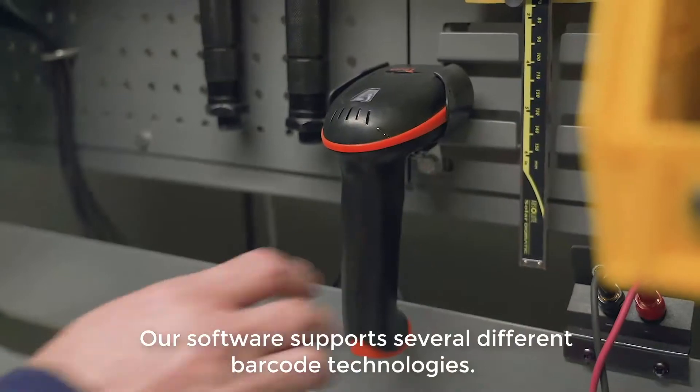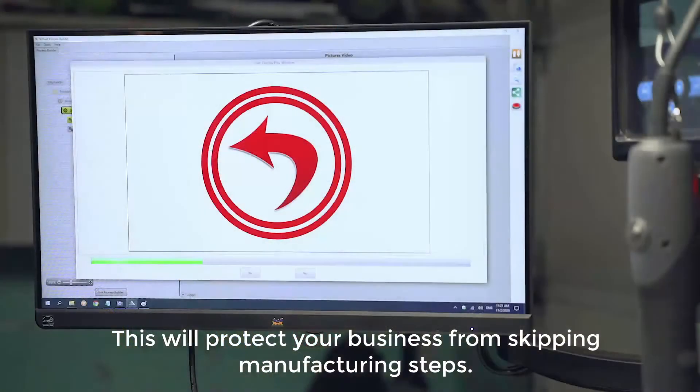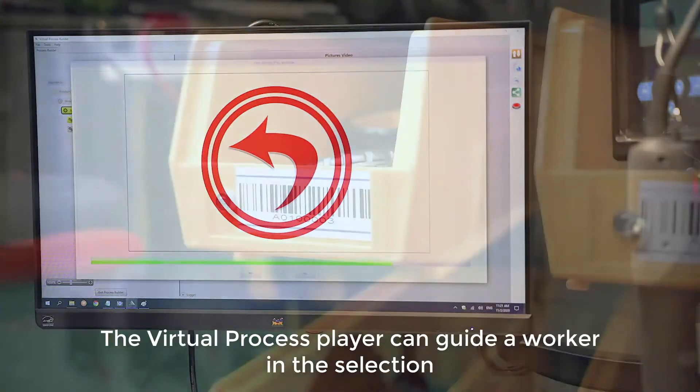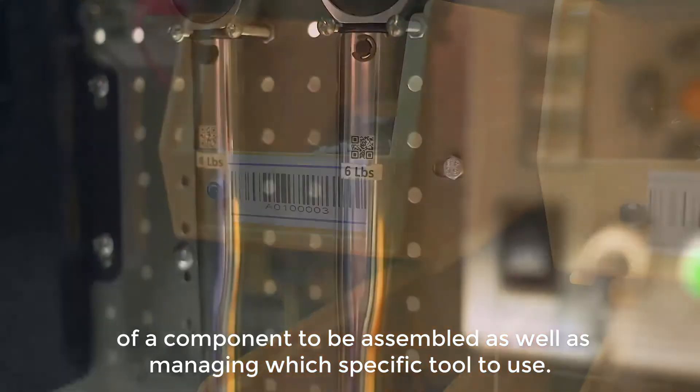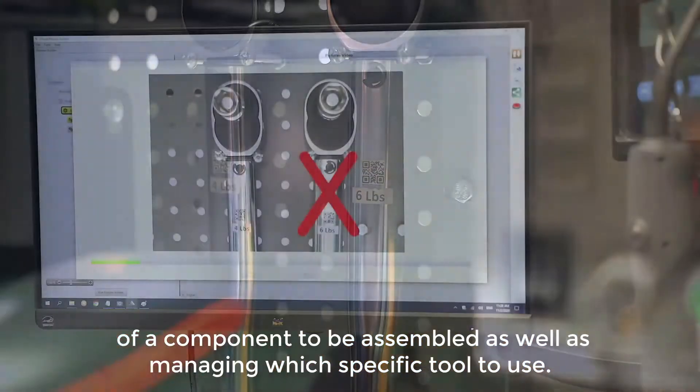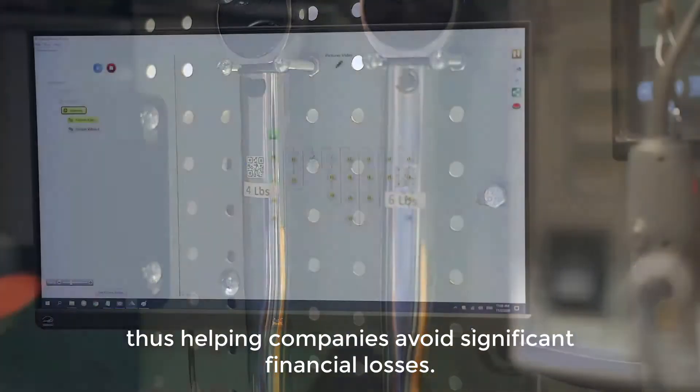Our software supports several different barcode technologies. This will protect your business from skipping manufacturing steps. The Virtual Process player can guide a worker in the selection of a component to be assembled as well as managing which specific tool to use. This eliminates handling errors and defects, thus helping companies avoid significant financial losses.